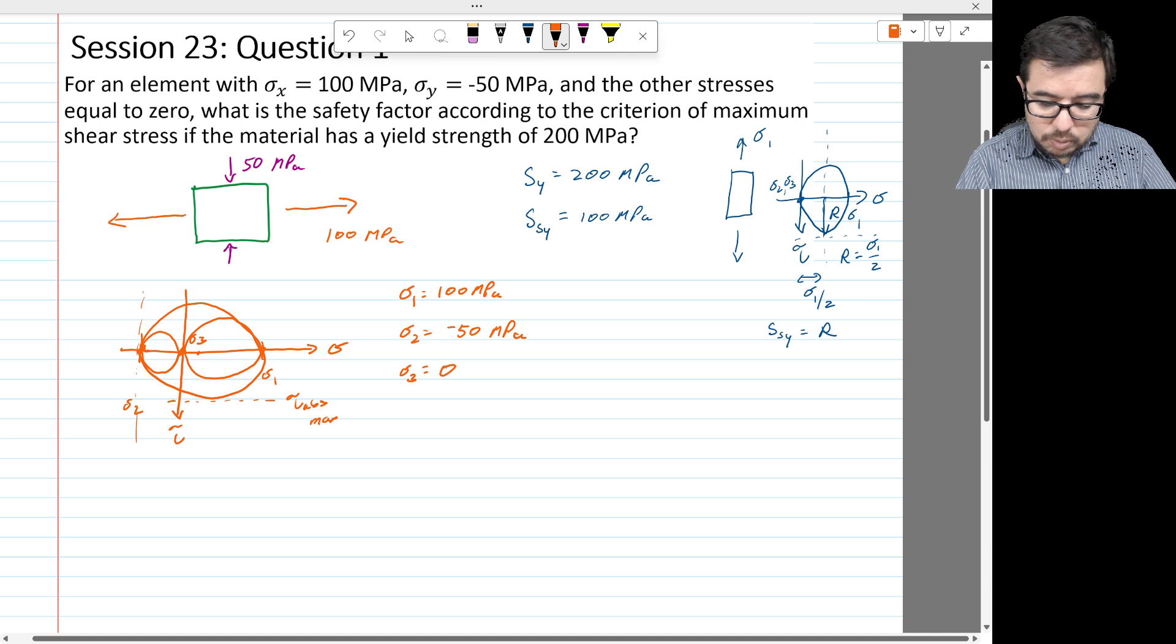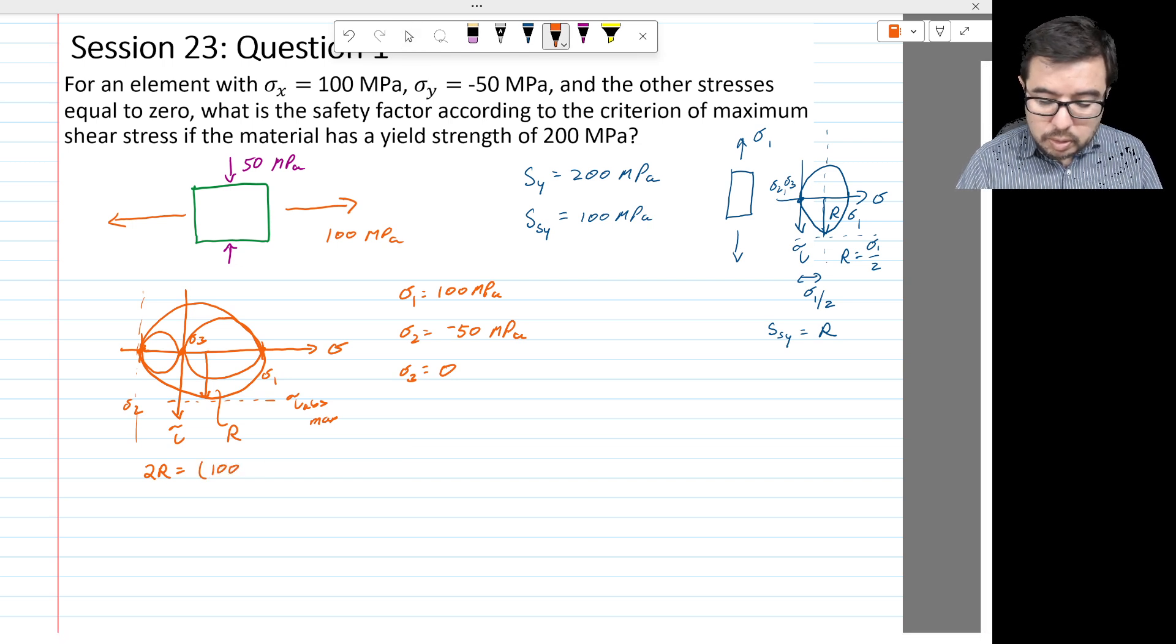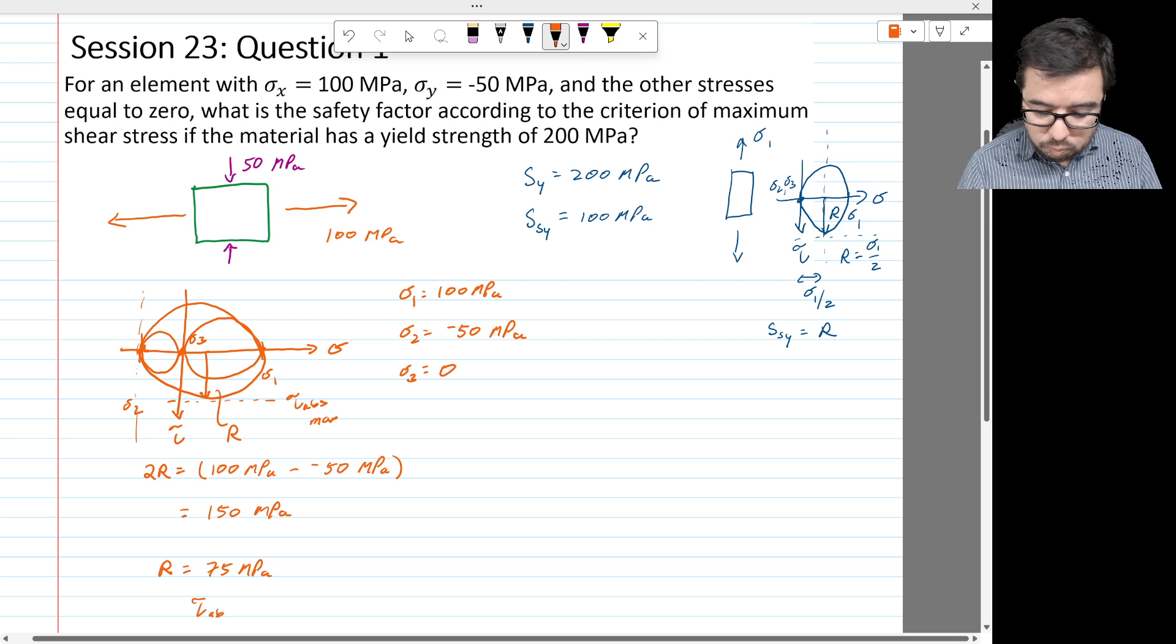And what is that value? That's going to be the radius of this Mohr circle. This is r, and that's describing the radius for this outer Mohr circle. What's that radius? We could say that 2r is equal to the 100 minus the minus 50, or the minus the negative 50, megapascals. So that's going to be 150 megapascals. And we have r then equal to 75 megapascals. And the tau absolute max is equal to that 75 megapascals.